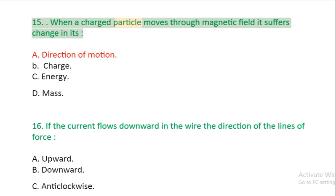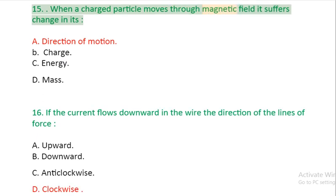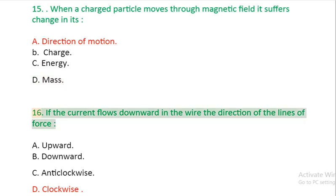Question 15: When a charged particle moves through magnetic field it suffers change in its: A: direction of motion. B: charge. C: energy. D: mass.